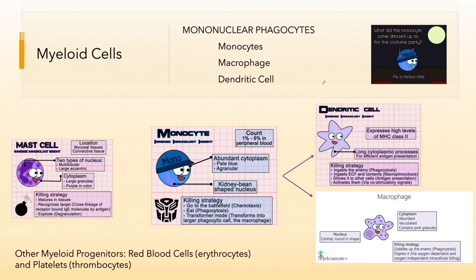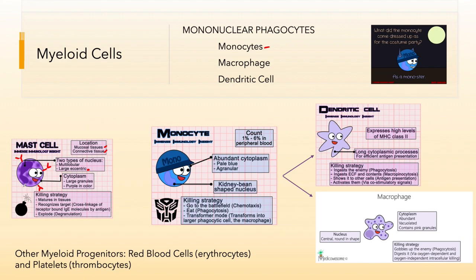Other myeloid cells include the mononuclear phagocytes — monocytes and mast cells. Mast cells are found in mucosal and connective tissue, not so much in circulation. They have a bilobular nucleus with very large granules and mature within tissue after leaving the circulatory system in an immature state. They have antibodies bound to their surface and are highly involved in allergic and parasitic reactions. They recognize their targets through cross-linking, similar to basophils and eosinophils, and degranulate.